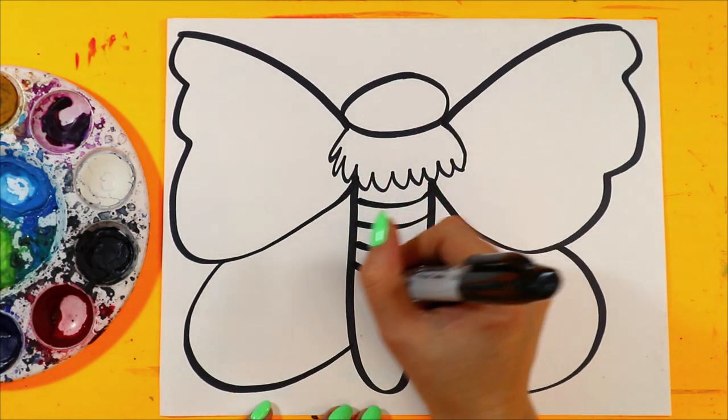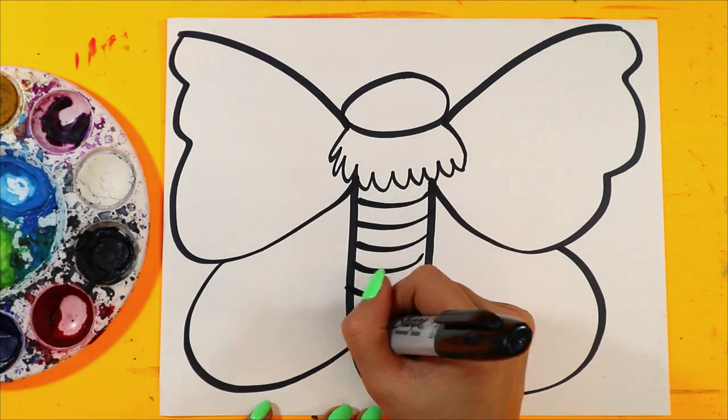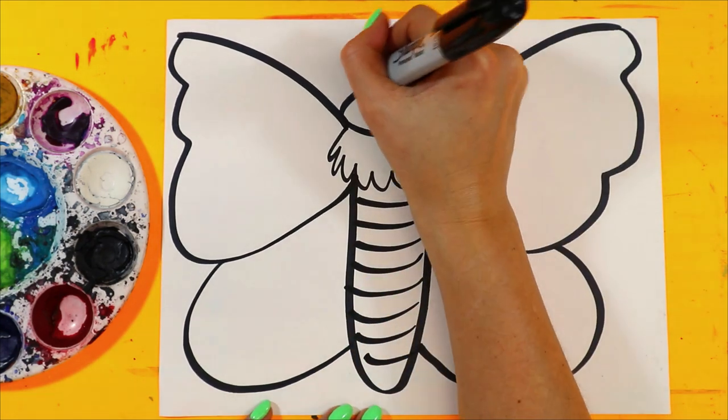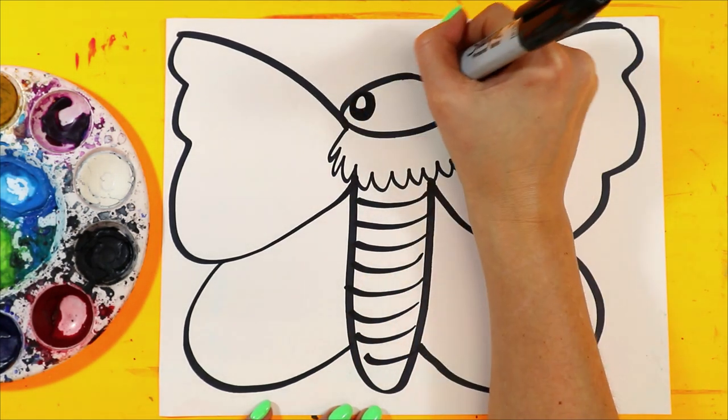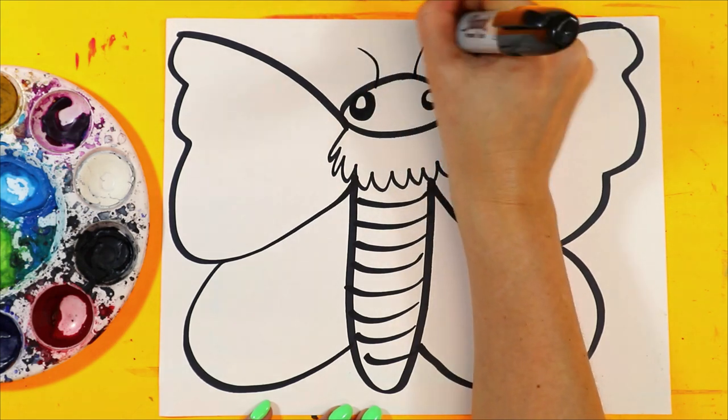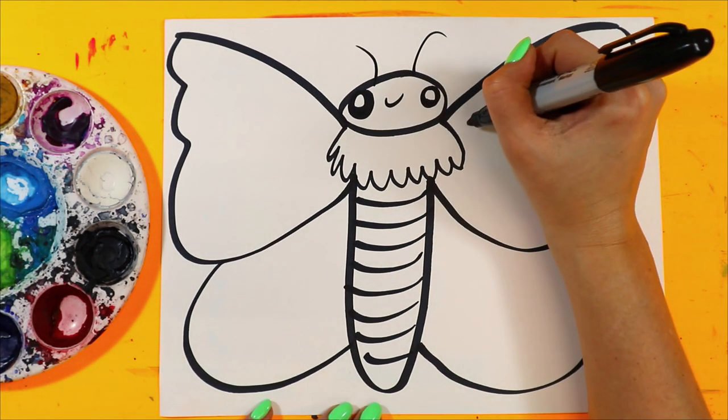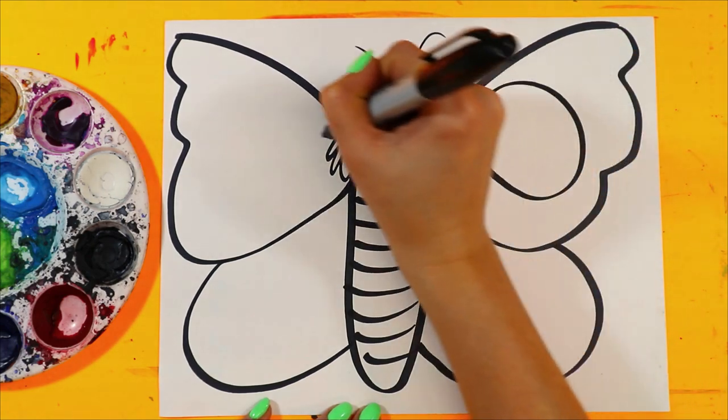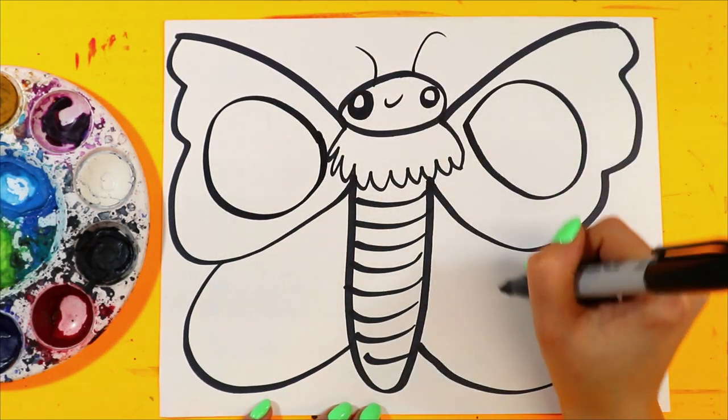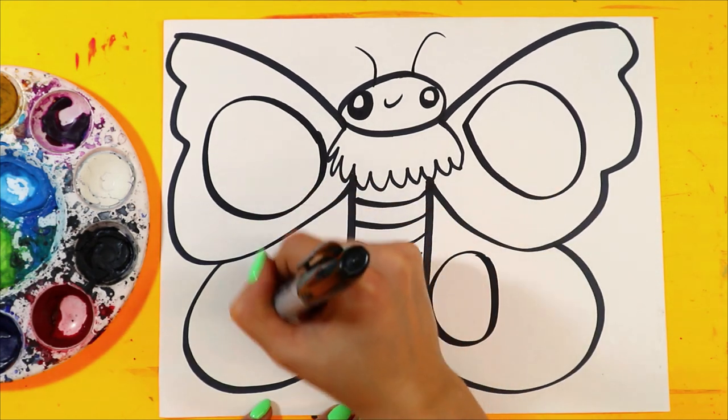We'll add a curve for the bottom. We'll add lines across the body. We can add an eye, antennas, and a smile. Nice and simple. But we need to add some designs on the wings. You can add whatever designs you want. Whatever we do on one side, we do on the other.